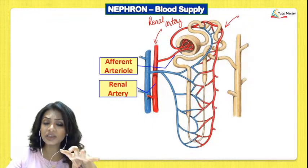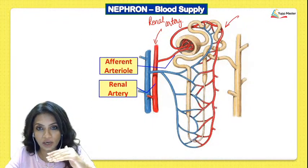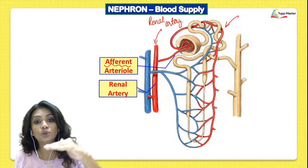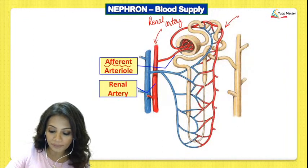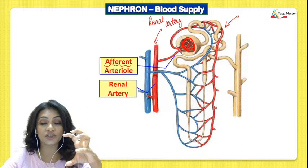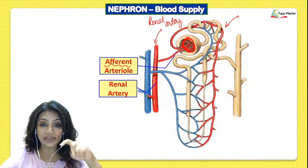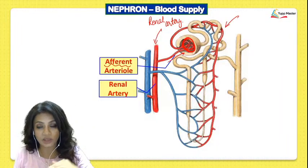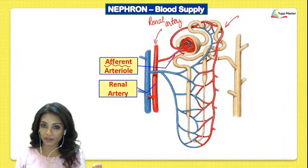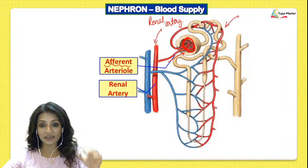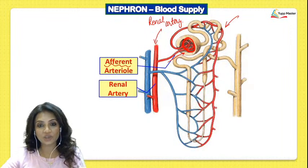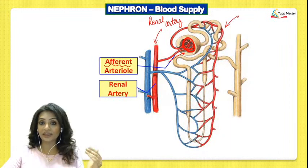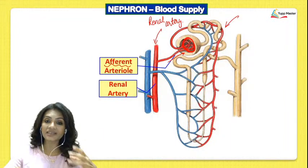The first arteriole is called the afferent arteriole. 'Afferent' always means something going towards a particular part. That whole bunch of capillaries is called the glomerulus, and this arteriole is going towards the glomerulus, so we call it the afferent arteriole. When we study the nervous system, afferent nerves similarly mean nerves going towards the brain.